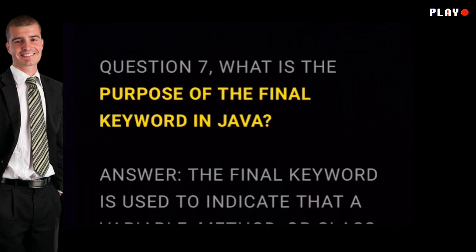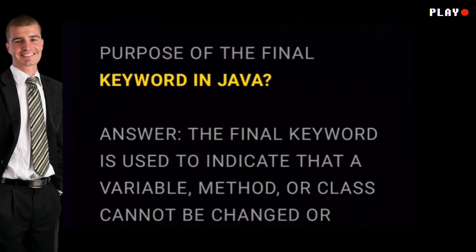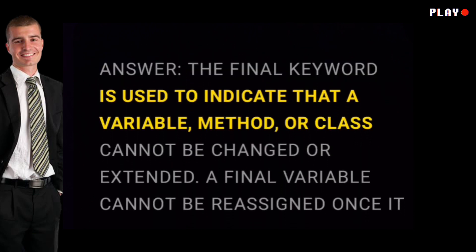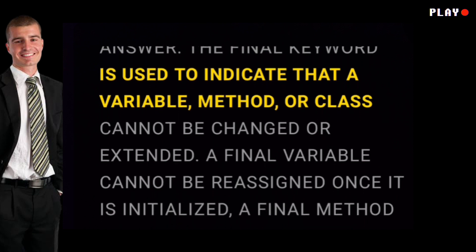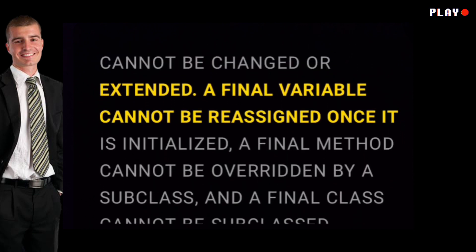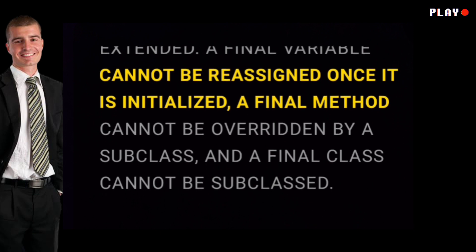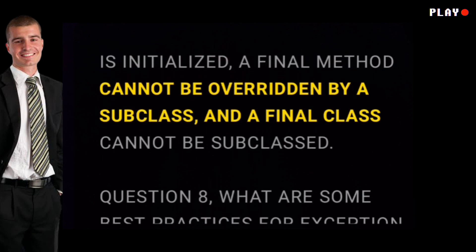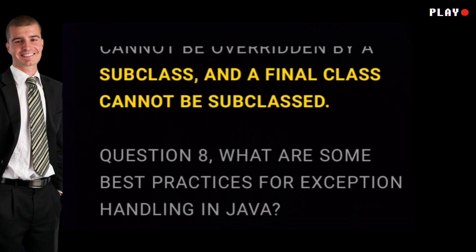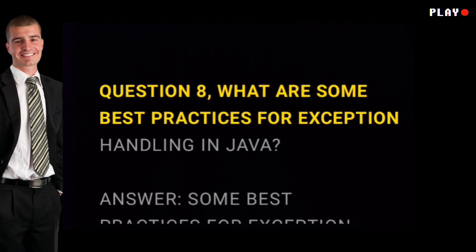Question seven: what is the purpose of the final keyword in Java? Answer: the final keyword is used to indicate that a variable, method, or class cannot be changed or extended. A final variable cannot be reassigned once it is initialized, a final method cannot be overridden by a subclass, and a final class cannot be subclassed.